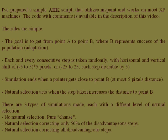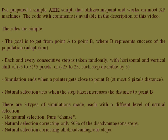The goal is to get from point A to point B, where B represents the success of the population — i.e., adaptation. Each and every consecutive step is taken randomly, with a horizontal and vertical shift of 5, 10, 15, 20, or 25 pixels. The simulation ends when a pointer gets close to point B, at most 5 pixels distance.